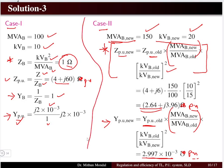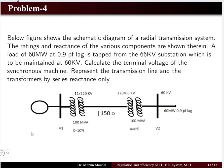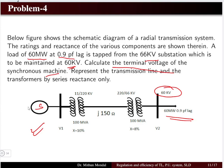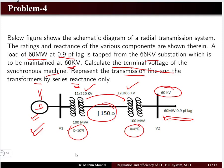Two different base conditions give two values for the impedance and admittance. Next problem: we are given a single line diagram of a radial transmission system. The ratings and reactances of the components are shown. The load is 60 MVA at 0.9 power factor lagging, tapped from a 66 kV substation to be maintained at 60 kV. We have a synchronous machine at the sending end and a load at the receiving end, connected via two transformers and a transmission line.